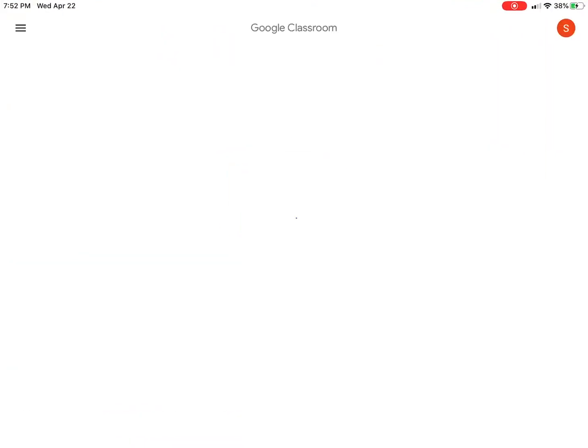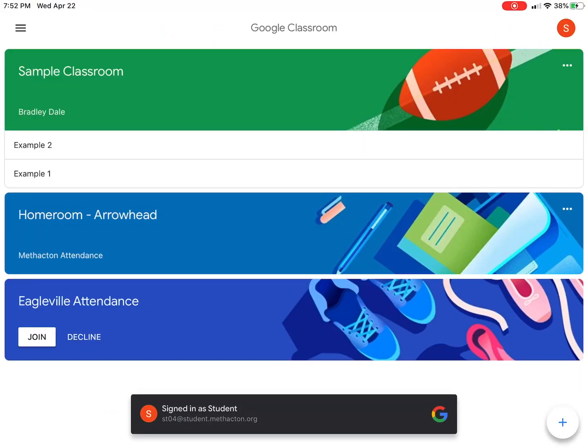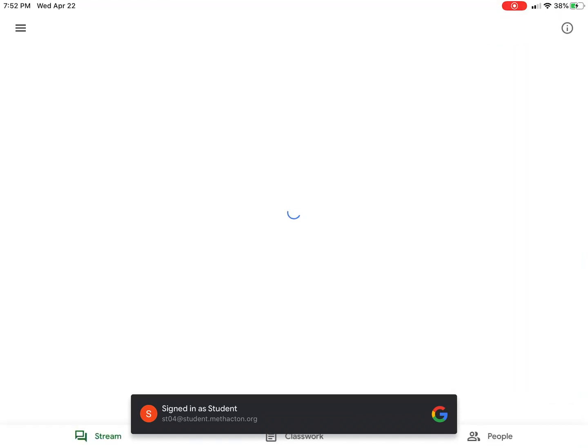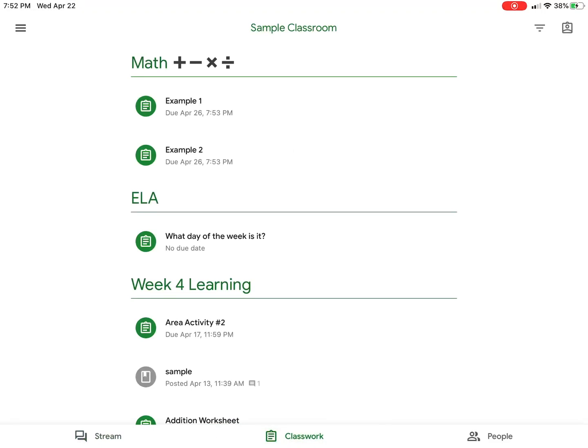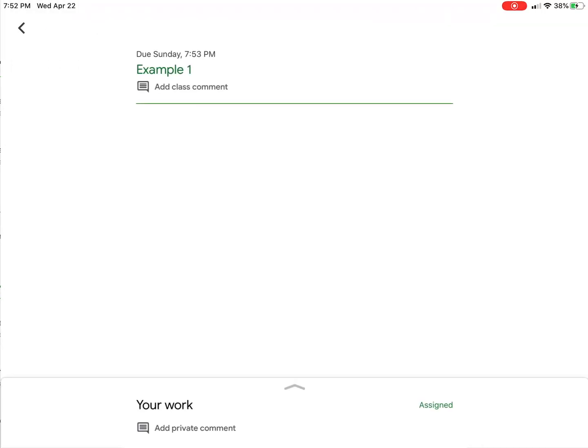We're going to select the app Google Classroom and then select this specific classroom. Now at the bottom we're going to select classwork and then select example one.